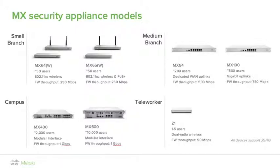Both the MX64 and MX65 come in a W designation for wireless. The built-in wireless features 802.11ac with up to 1.2 gigabits per second throughput and four separate SSIDs. They're both capable of 250 megabits of firewall throughput, 100 megabits of VPN throughput, and are recommended for installations of up to 50 users. They're a great branch-in-a-box solution.